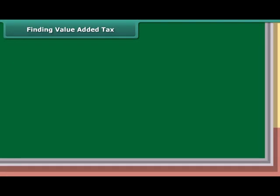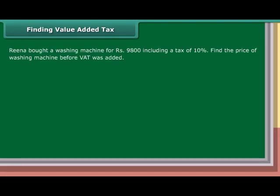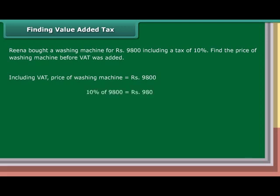Finding value added tax: Rina bought a washing machine for Rs. 9,800 including a tax of 10%. Find the price of the washing machine before VAT was added. Including VAT, price is equal to Rs. 9,800. 10% of 9,800 is equal to Rs. 980. Price before VAT added is equal to 9,800 minus 980, which is equal to Rs. 8,820.